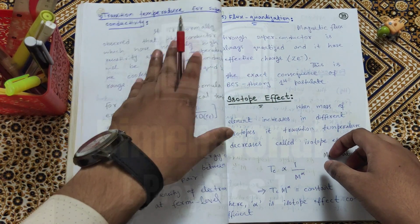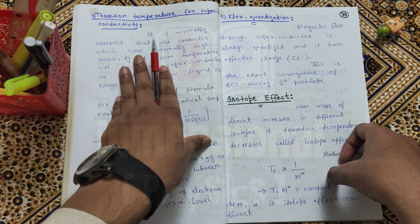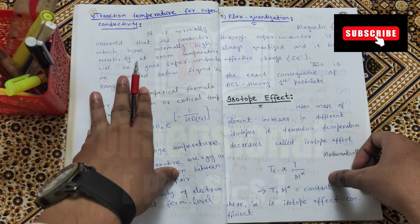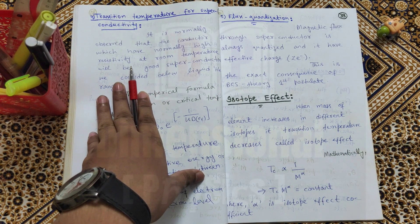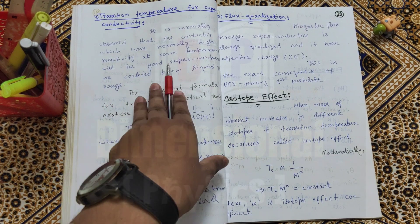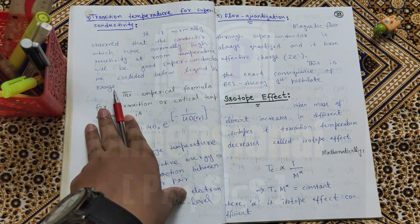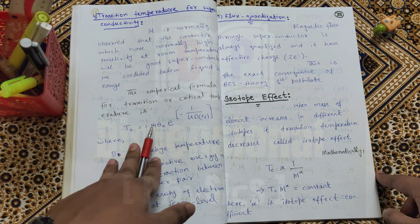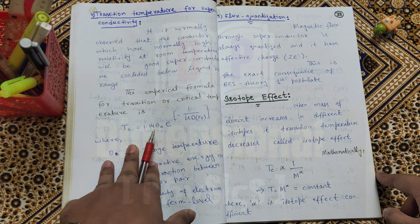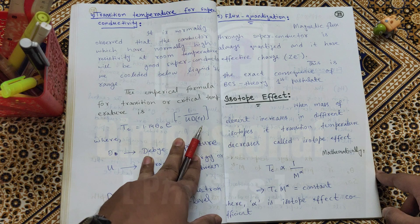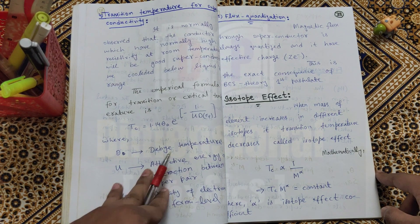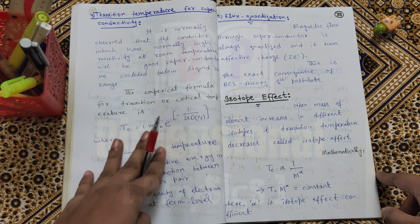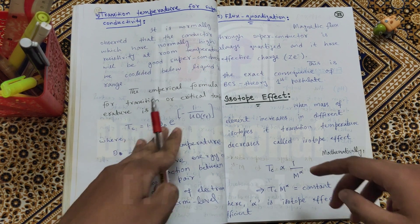Fourth postulate: transition temperature of superconductivity. It is normally observed that conductors which have normally high resistivity at room temperature will be good superconductors when cooled below the liquid helium range. The empirical formula for transition or critical temperature is: Tc = 1.14 · θD · e^(−1 / U · D(EF)), where θD is the Debye temperature, U is the attractive energy or interaction between Cooper pairs, and D(EF) is the density of electrons at the Fermi level.